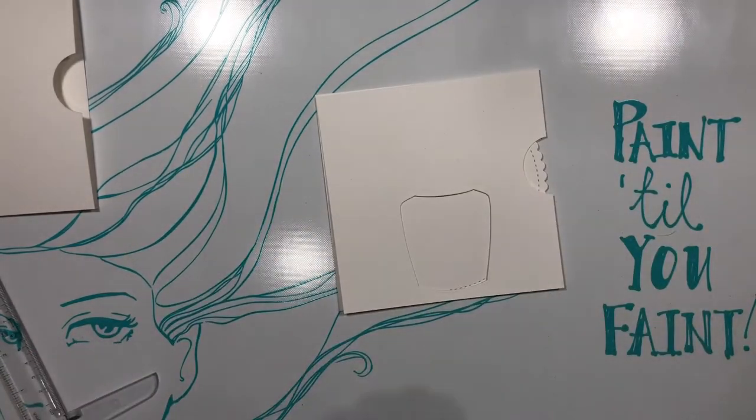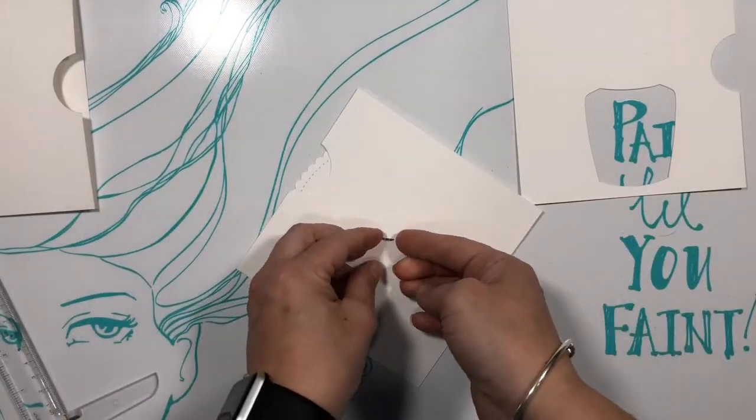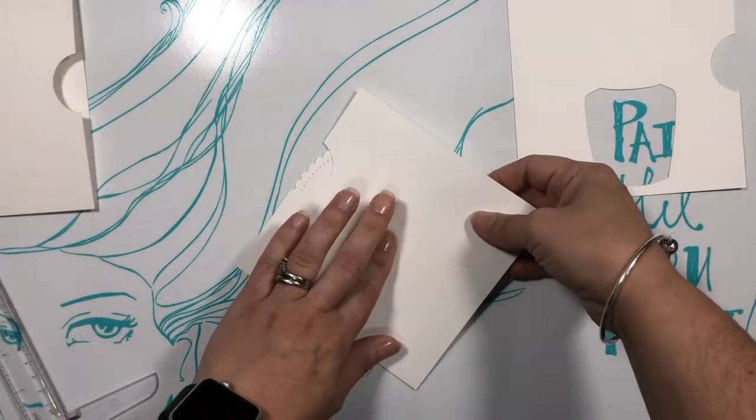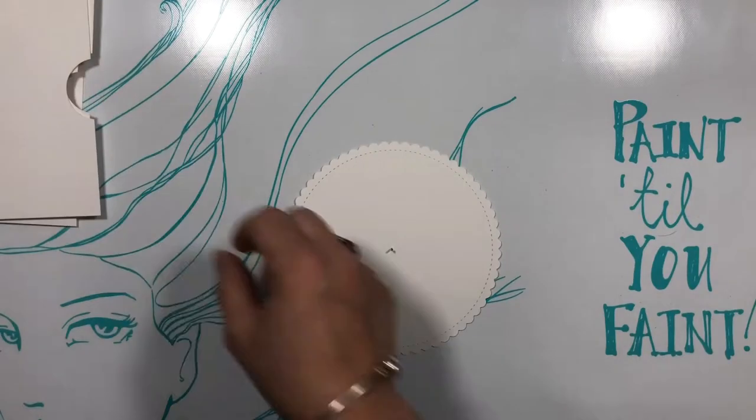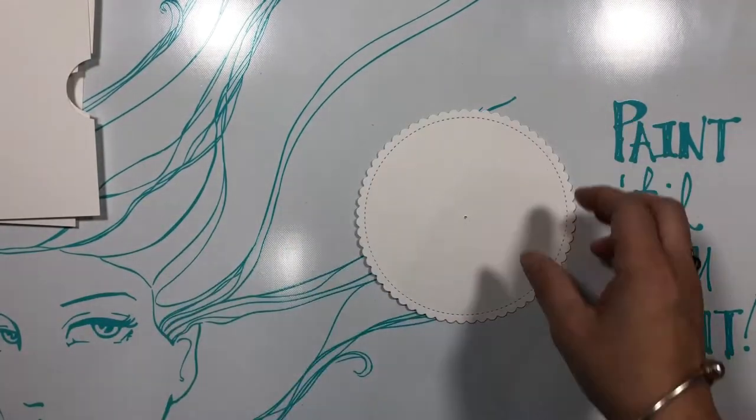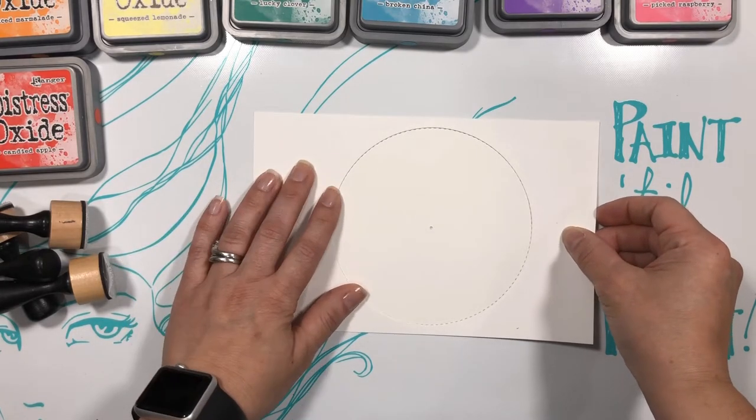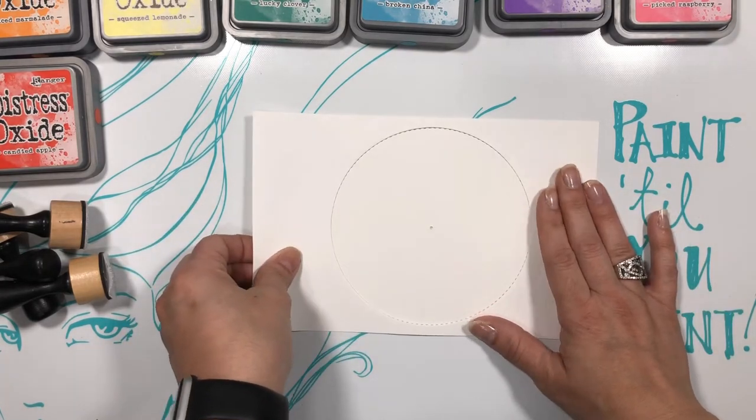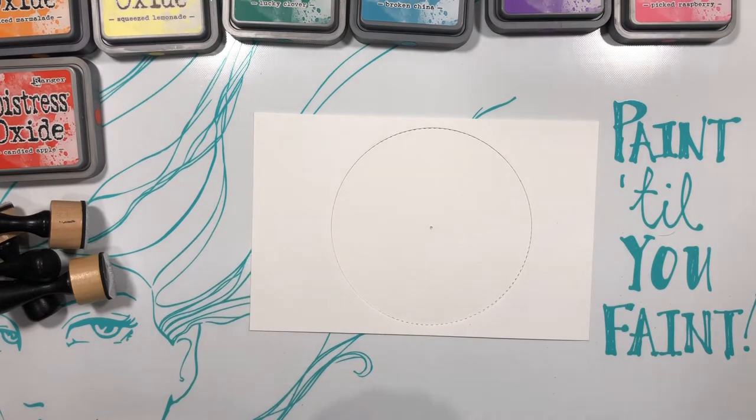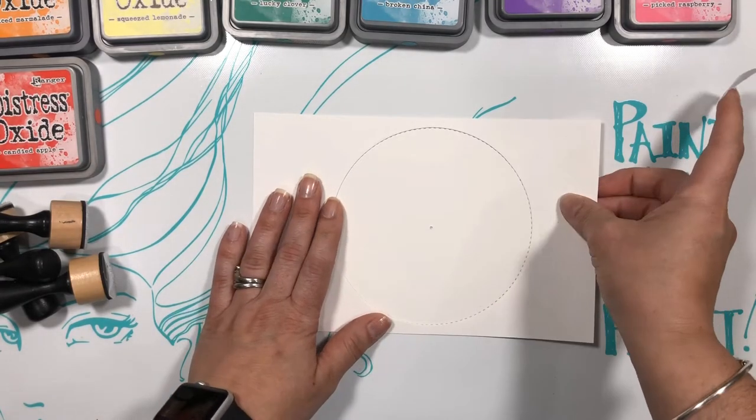And now that the spinner mechanism is ready I can take it all apart and work on the color wheel. Before coloring the wheel in I created a mask by using a scrap piece of paper and a large circle die and I'm just going to line it up with the stitching of the scalloped circle.